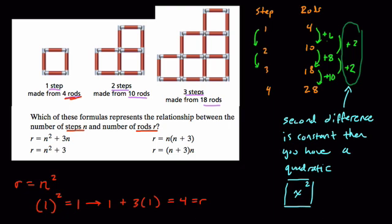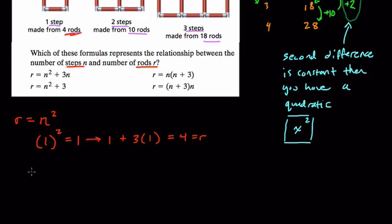So our working formula right now is either r equals n squared plus three or r equals what? Well, n squared plus, we tried it here, three times one. And one was the step number n, so it's three n. It's one of these two. Let's try the next one.